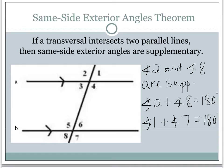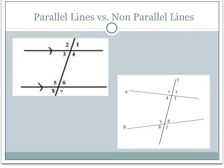All of these theorems only work if those lines are parallel. The postulate and theorems we just looked at only work for parallel lines cut by a transversal. If we don't know that the lines are parallel — if there's no evidence that line A and line B are parallel — we can't say anything about these pairs of angles. We can still name them, like saying angle four and angle eight are corresponding angles, or angle three and angle five are alternate interior angles, but we can't say anything about their measurements unless the lines are already known to be parallel.